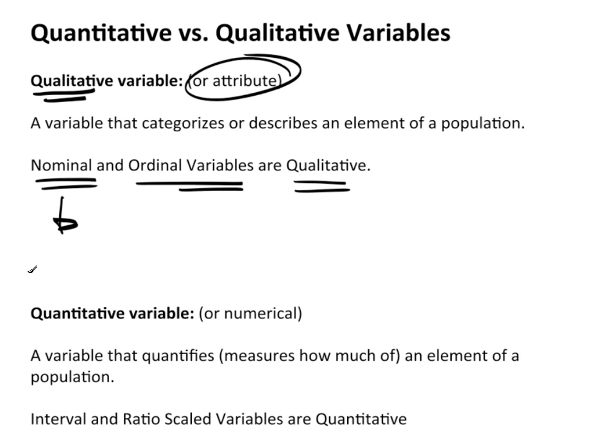Hair color as an example. That describes a quality about somebody.